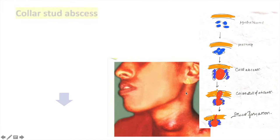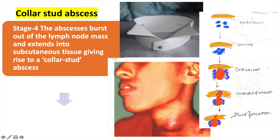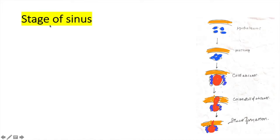So far, the cold abscess was confined by the deep fascia. In this stage, the pus formation pierces the deep fascia and forms a swelling under the skin, resulting in two collections of pus — one below the deep fascia and one below the skin — which communicate through a narrow opening. This stage is called the stage of collar stud abscess, deriving its name from a collar stud, which also has two components.